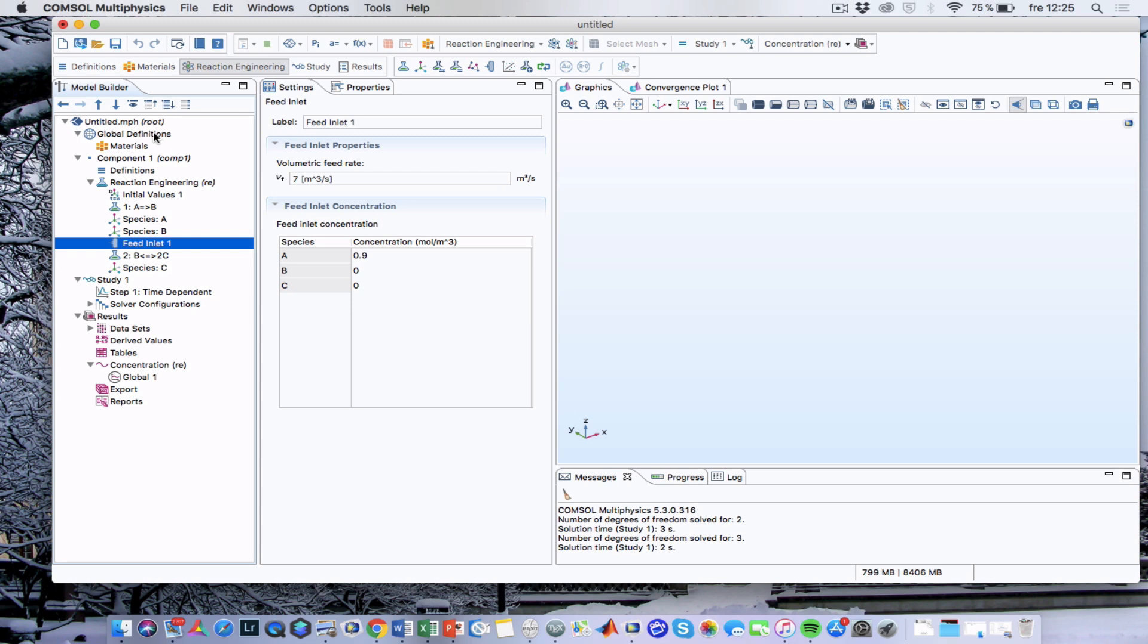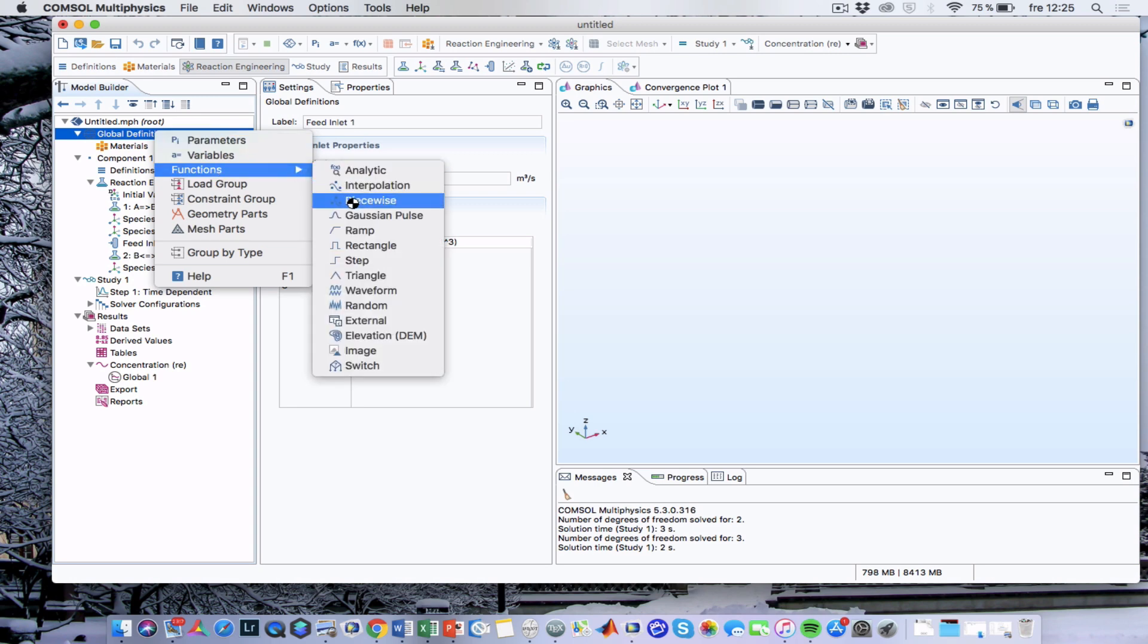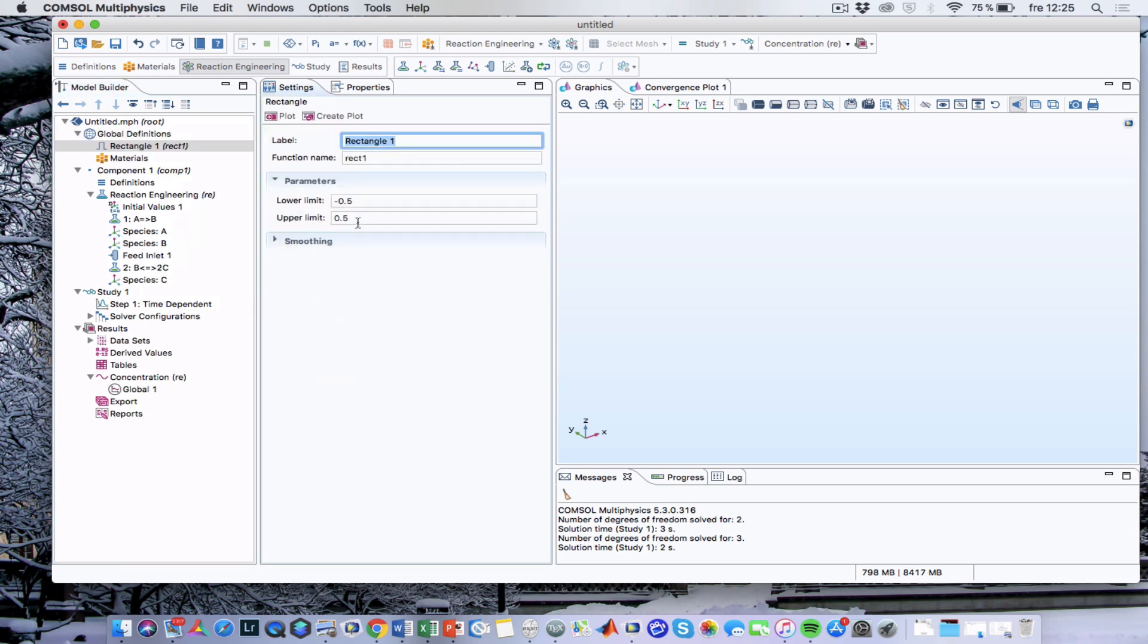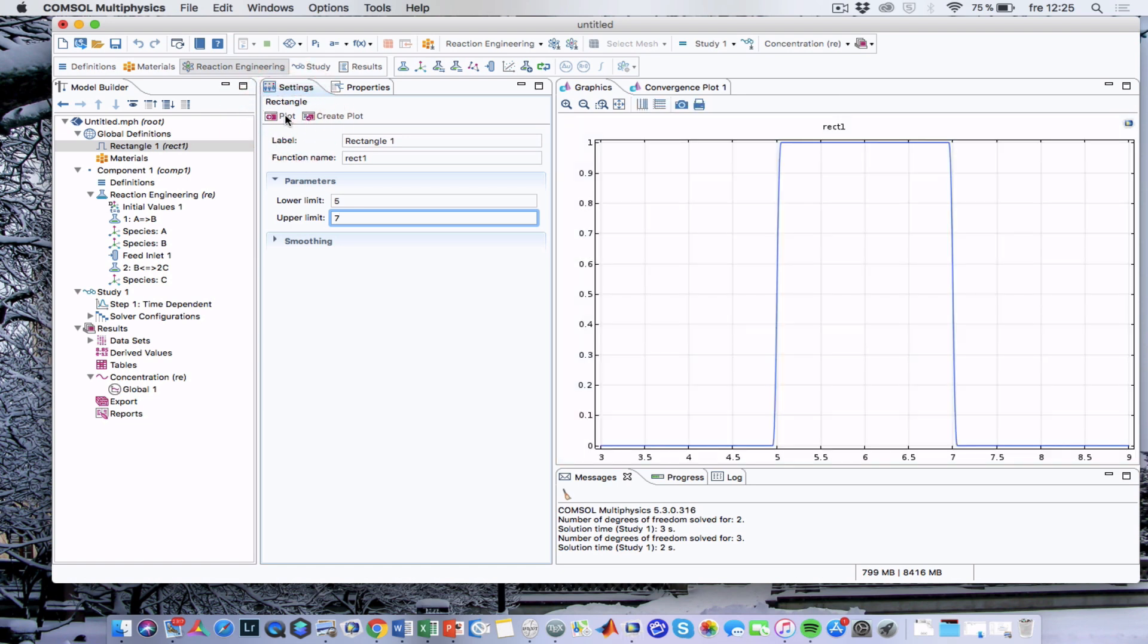So rather than having the volumetric flow constantly set to 7, we will change that using a function. And the functions are defined in what's called global definitions. So if I double-click here, I can have a rectangle function. And if I define a rectangle function as something that starts at 5 and ends at 7, we'll just take a look at it. And COMSOL's rectangle function implements some function that is 0 up to 5, 1 to 7, which is the upper limit. And it's called rect1.